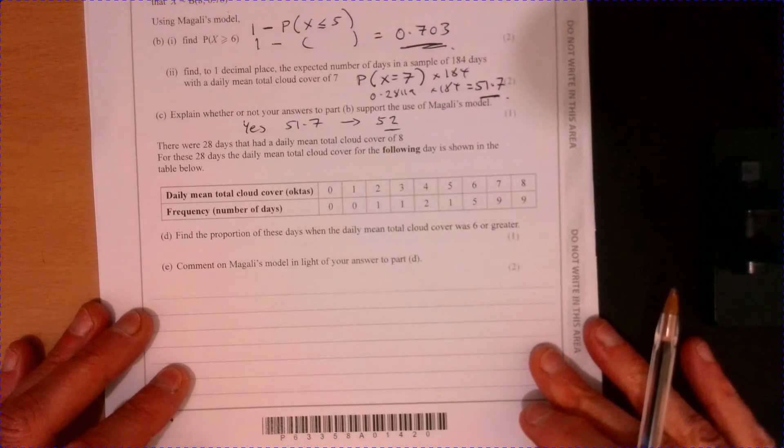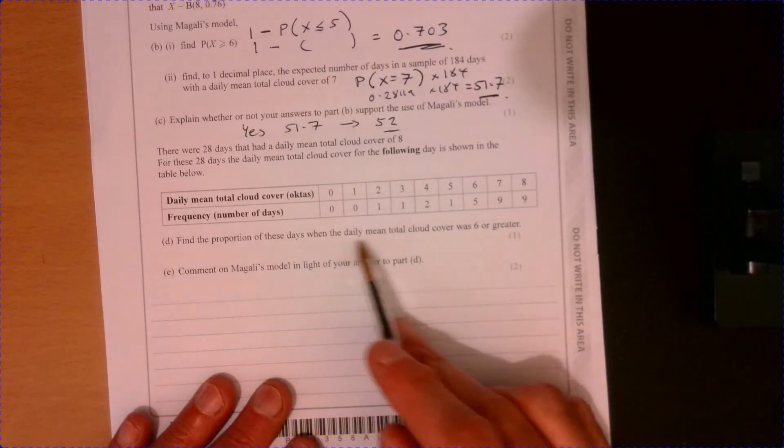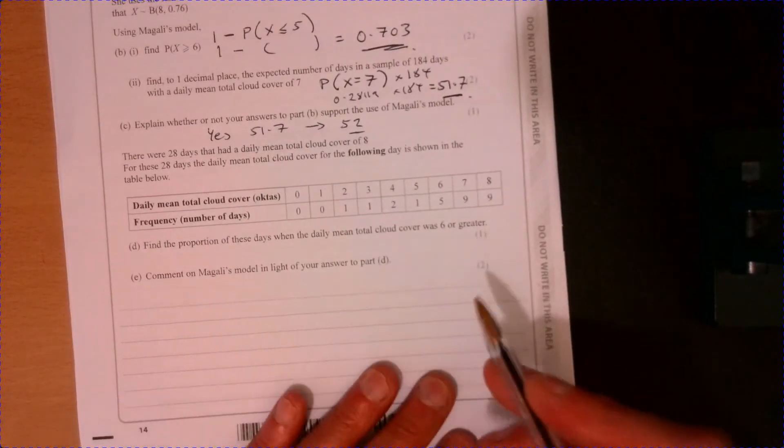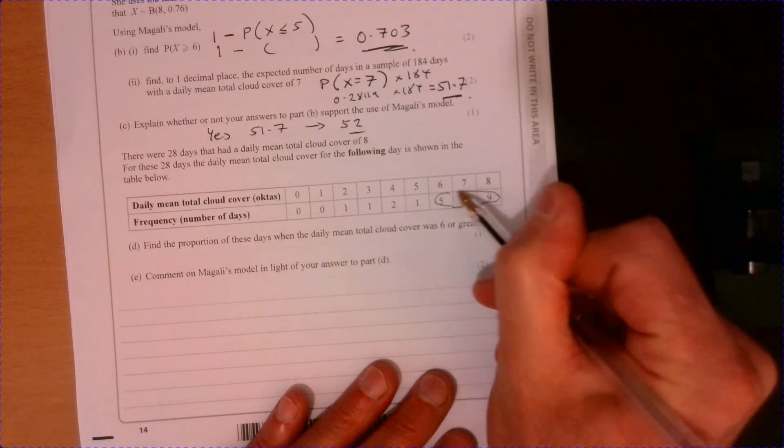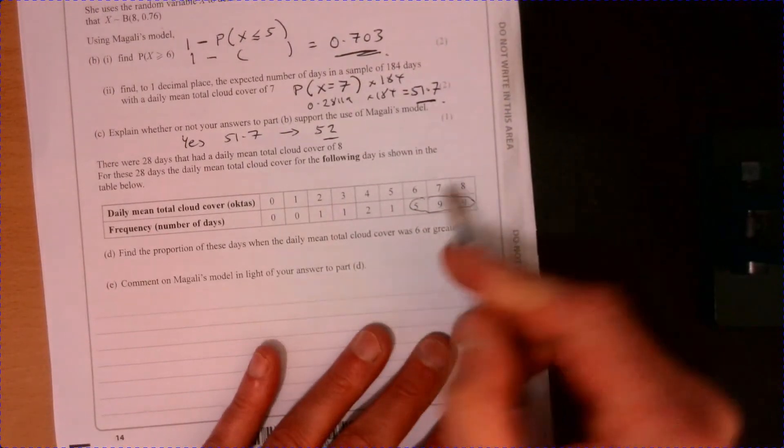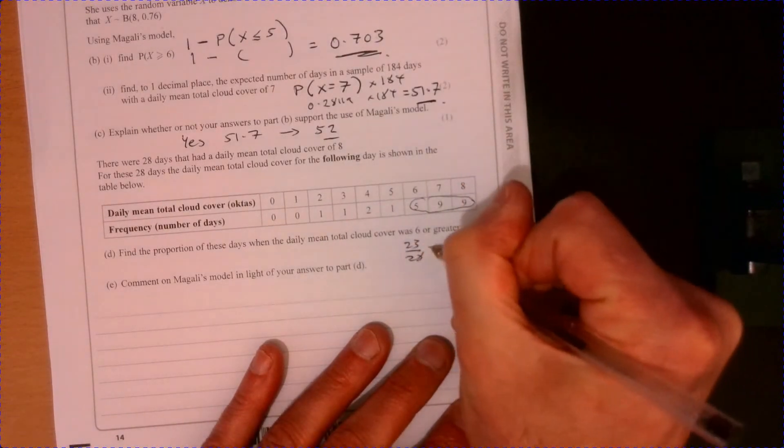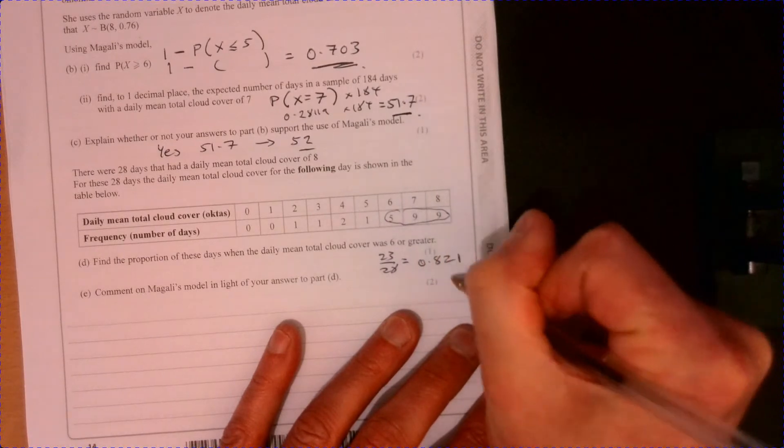Right, let's have a look at part D. Find the proportion of these days when the daily mean total cloud cover was 6 or greater. Well, again, that's quite nice. So it's just taking those figures just down there, add them together over 28. And that gives us 0.821.